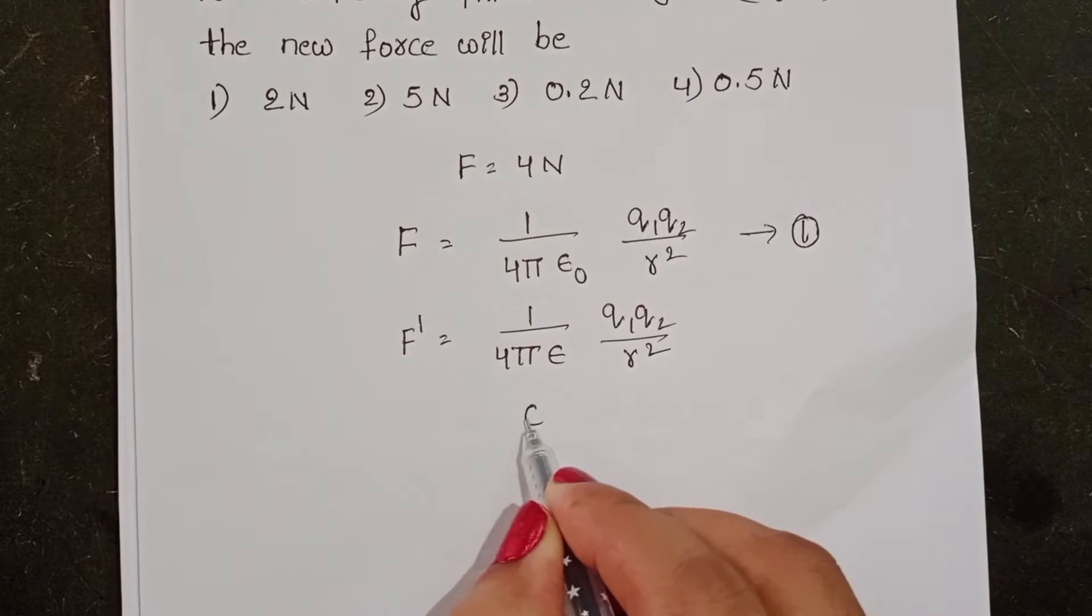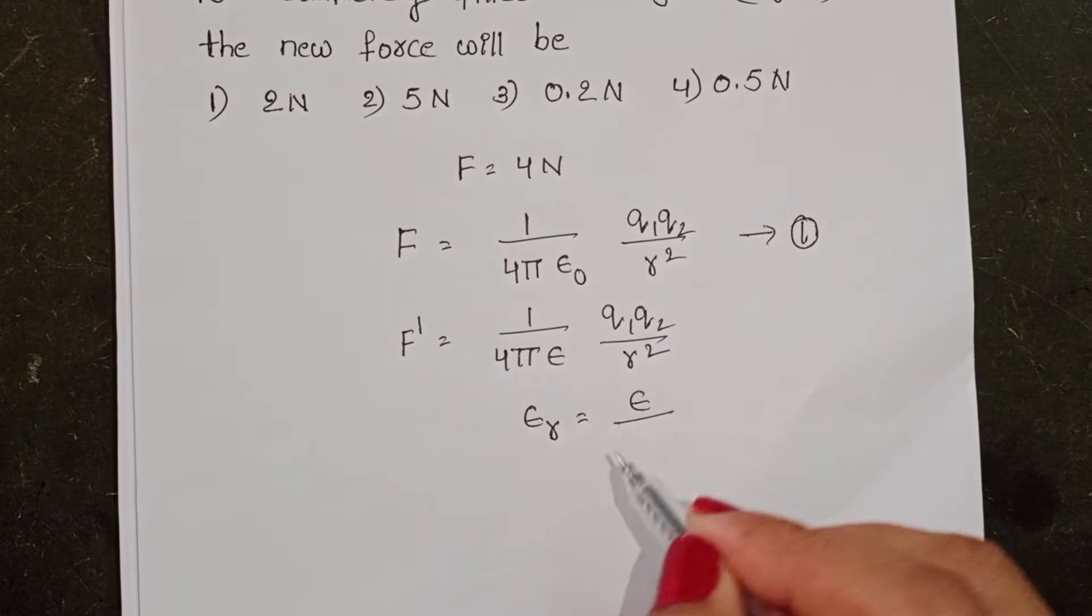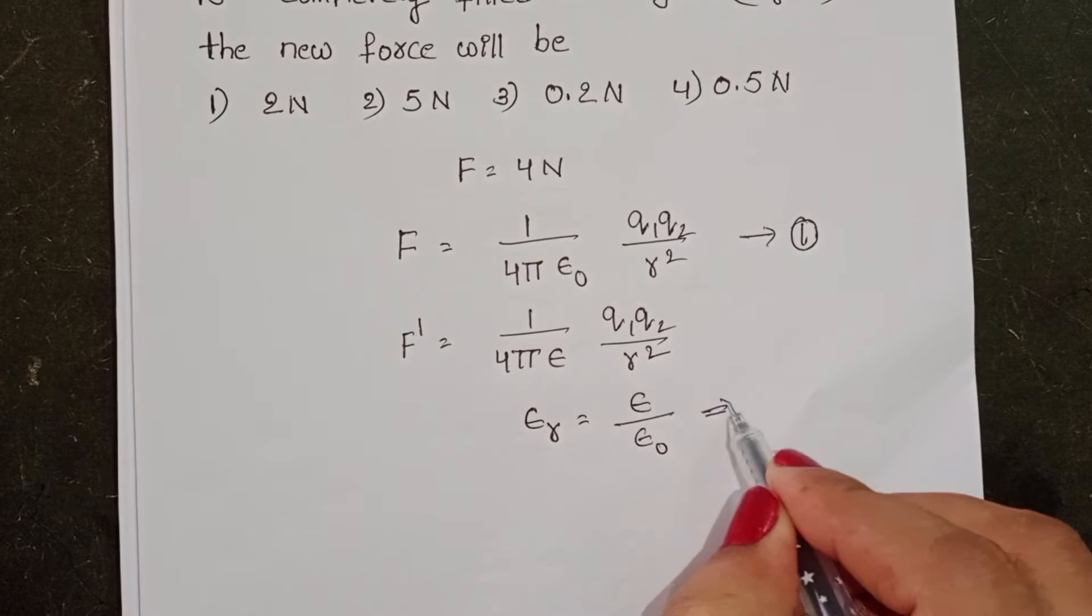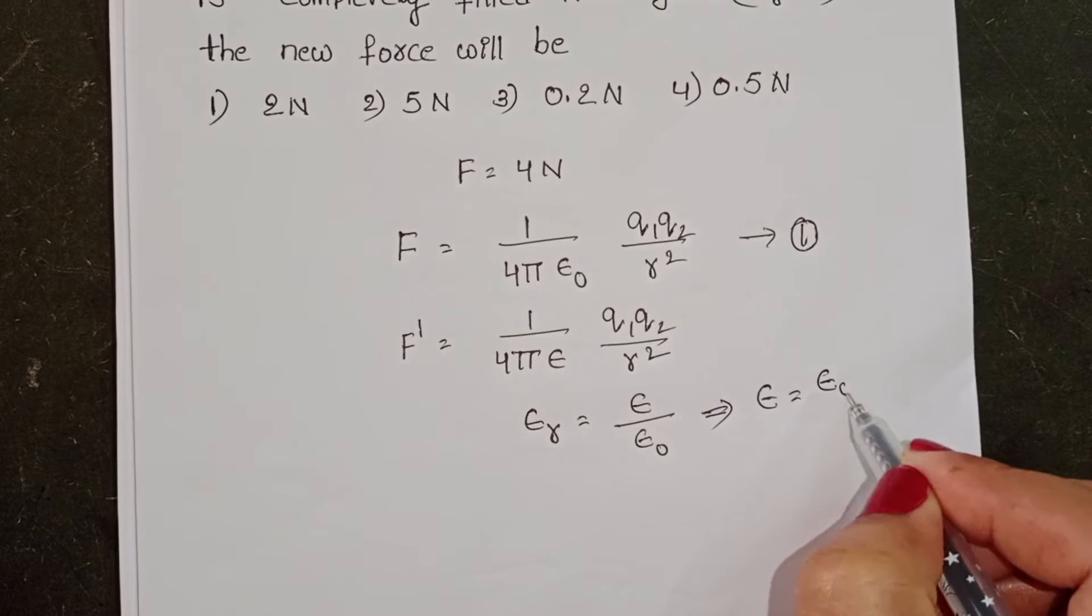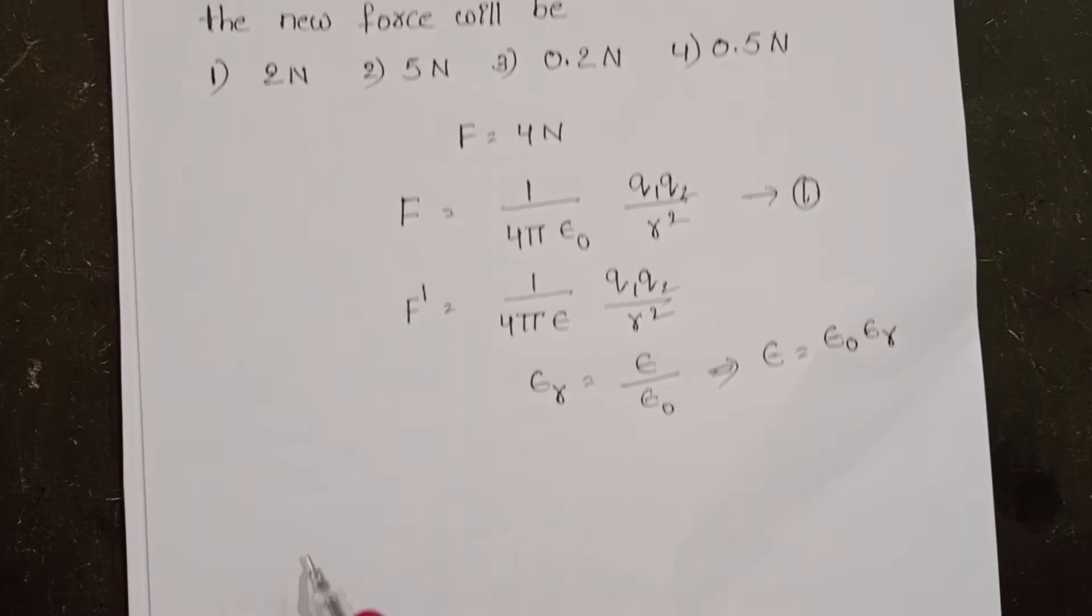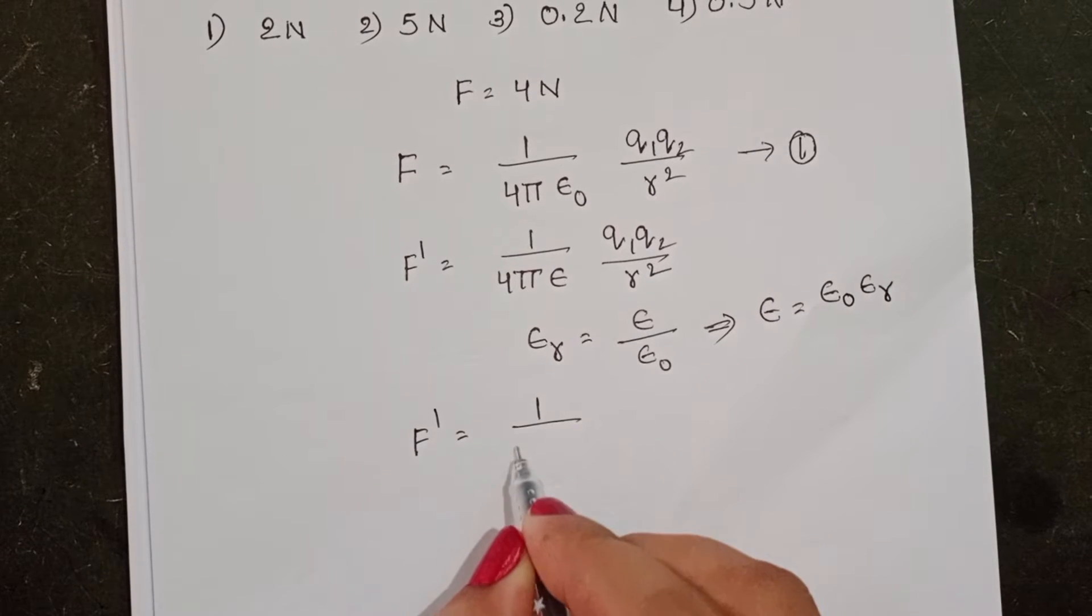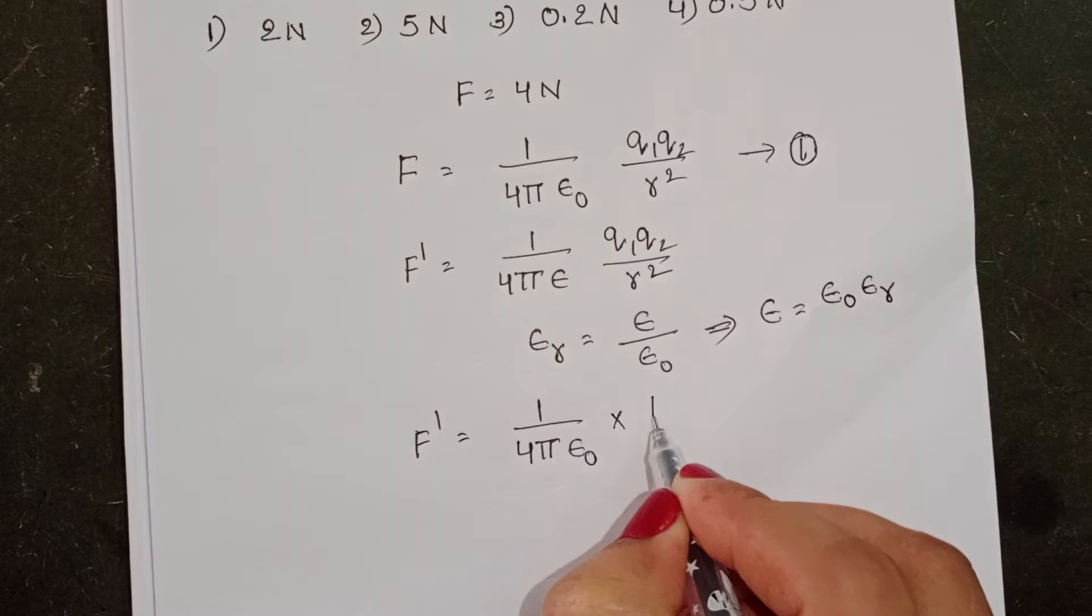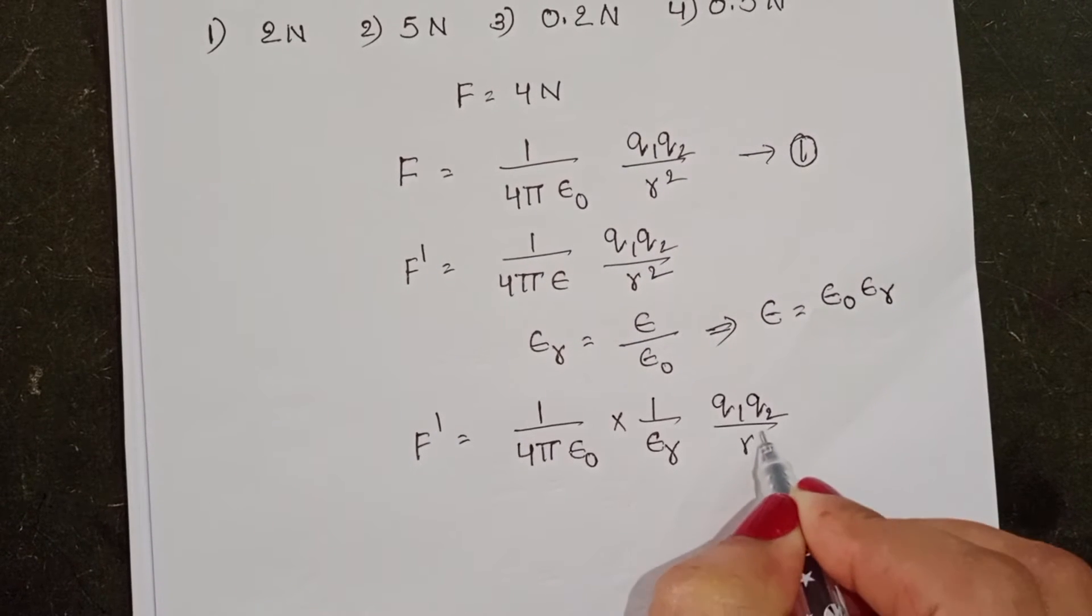We know relative permittivity is equals to permittivity of medium to the permittivity of free space. From this, epsilon is equals to epsilon 0 into epsilon r. Then this formula changes to f dash equals to 1 by 4 pi epsilon 0 into 1 by epsilon r into q1, q2 by r square.